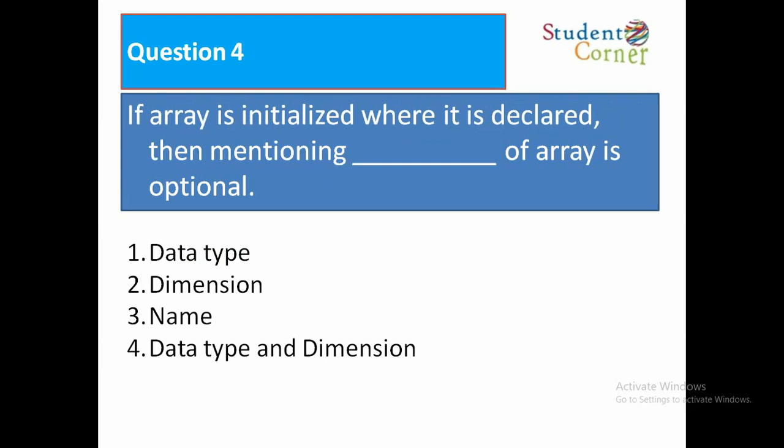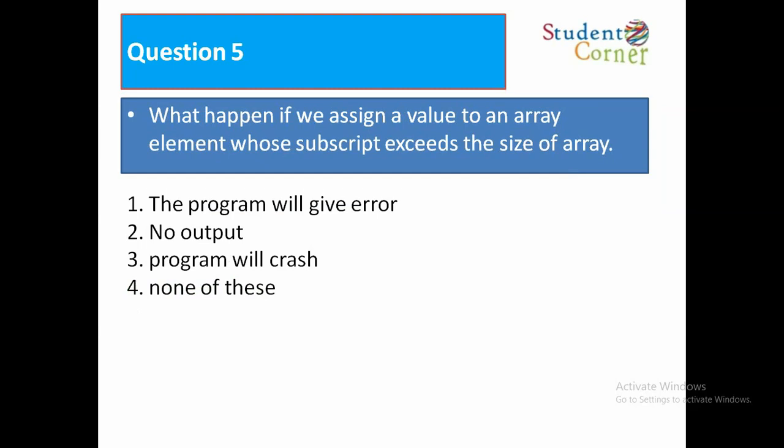Question number four: If an array is initialized where it is declared, then mentioning the __ of the array is optional. Option 1: Data type. Option 2: Dimension. Option 3: Name. Option 4: Data type and dimension. The answer is Dimension.